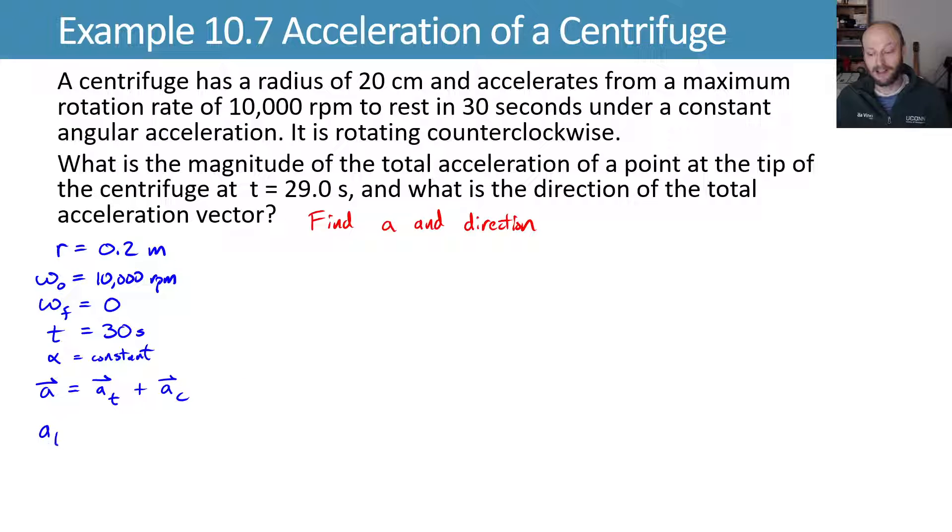We'll start with my tangential acceleration is equal to r times alpha. That's fine, but I don't know alpha yet. I know it's a constant, but I don't know what it is. Since I know it's a constant, let's go ahead and find it by using a constant angular acceleration formula. This one looks most useful: omega final is equal to omega initial plus alpha times time. We can solve that for alpha in terms of the things we know. Alpha is equal to omega final minus omega initial over time.